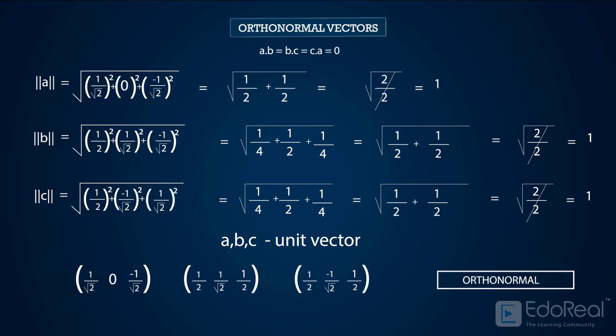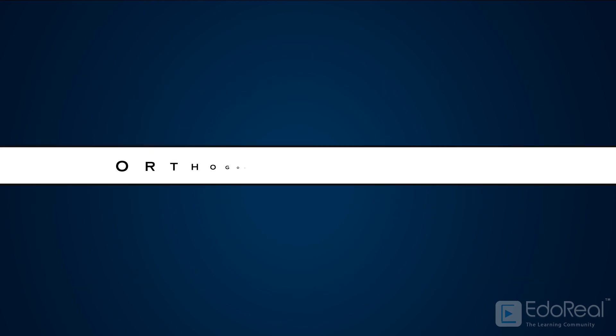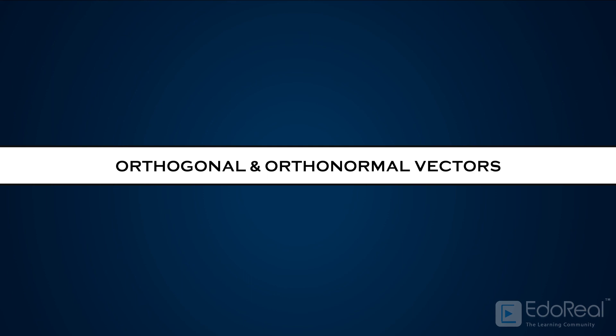An important note: a real matrix A is orthogonal if the inverse of A equals the transpose of A. In this video, we have discussed the orthogonal vectors and orthonormal vectors.